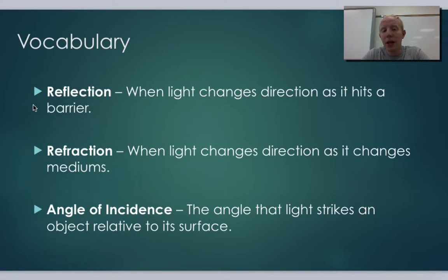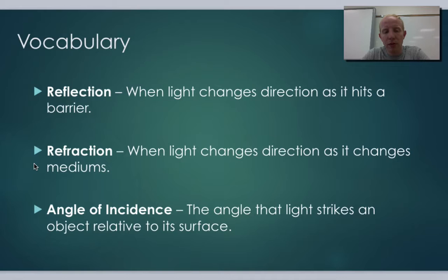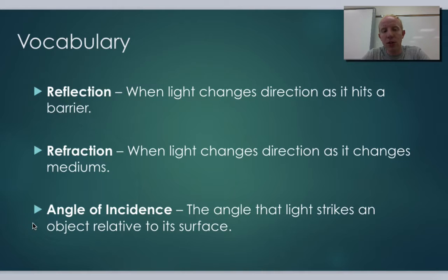Reflection is when light changes direction as it hits a barrier — basically, it just bounces off the surface. You've probably seen yourself in a mirror; that's a reflection. Refraction is when light changes direction as it changes mediums, or as it goes through a surface. Think of glasses, contacts, lenses, and windows. The angle of incidence is the angle at which light comes in and strikes that surface.